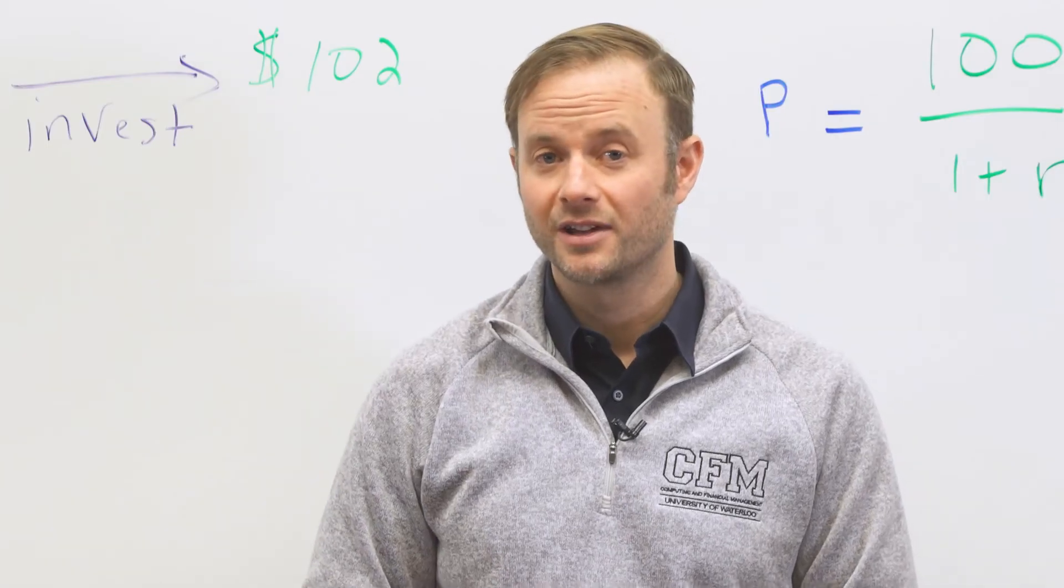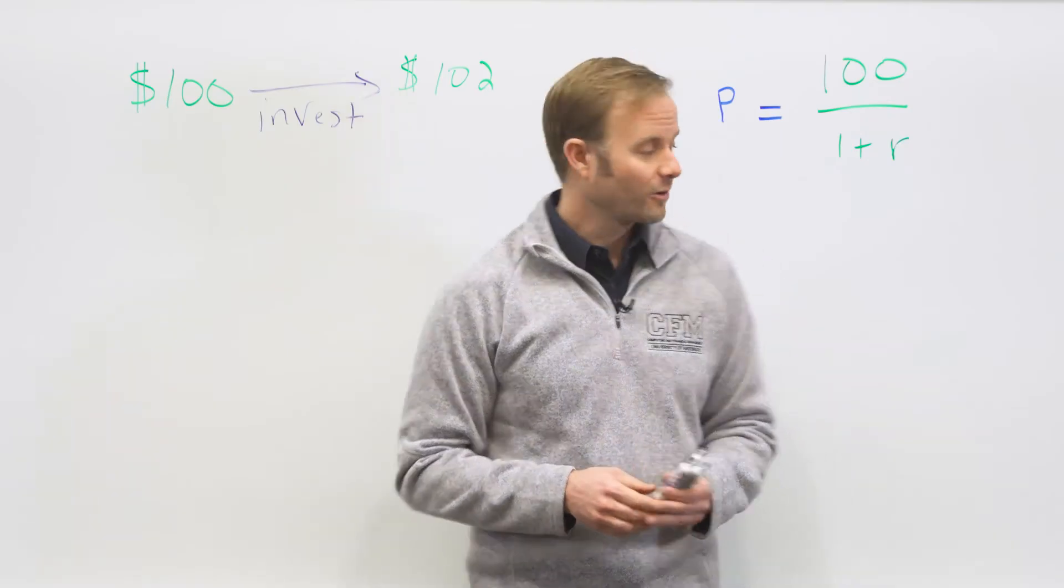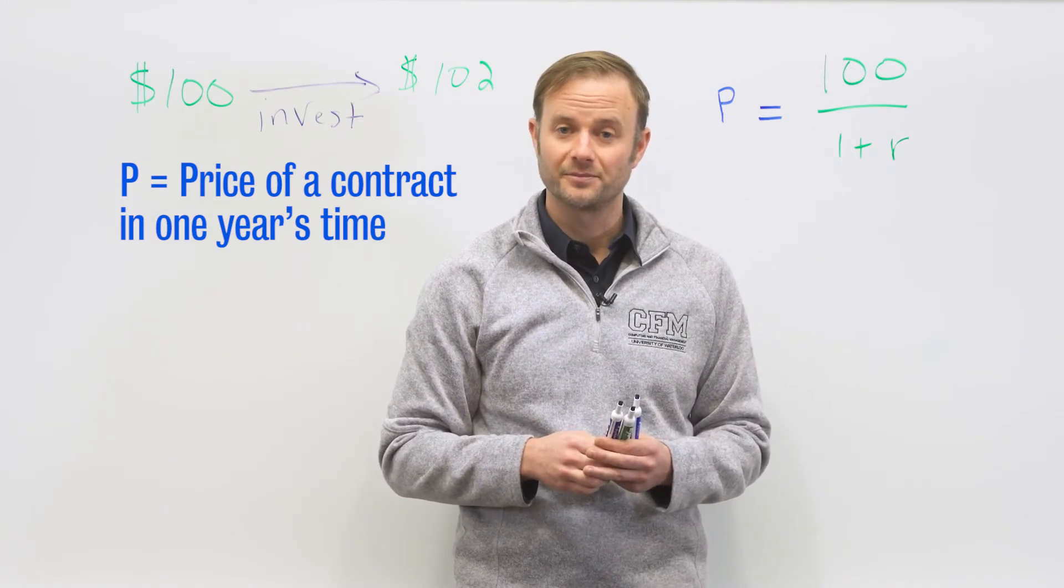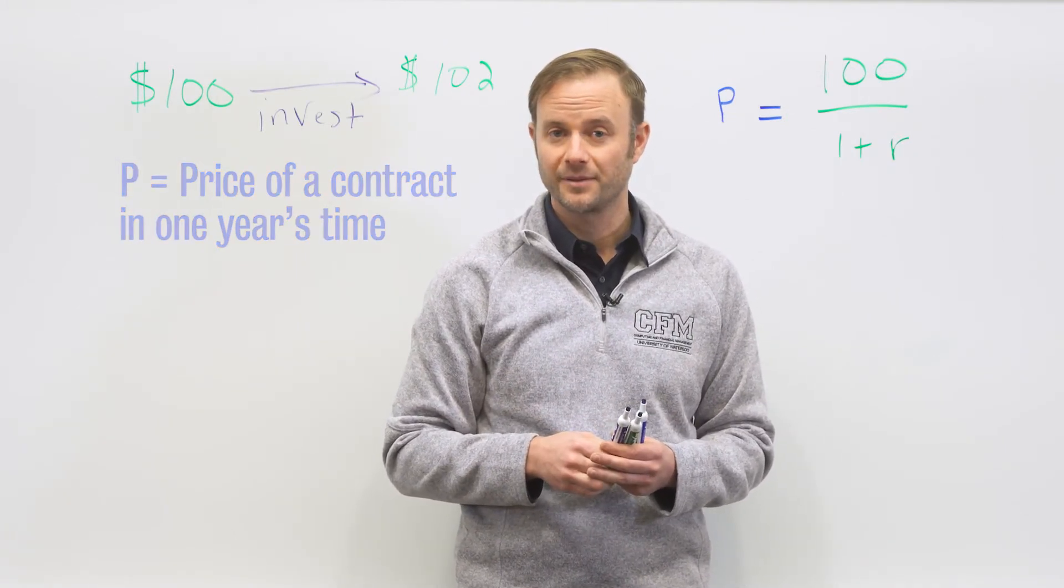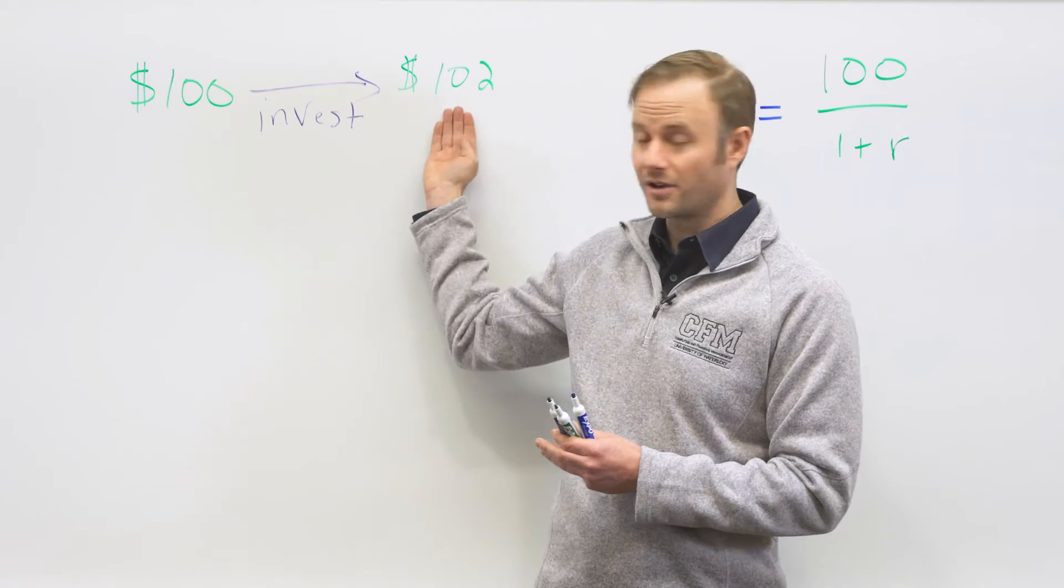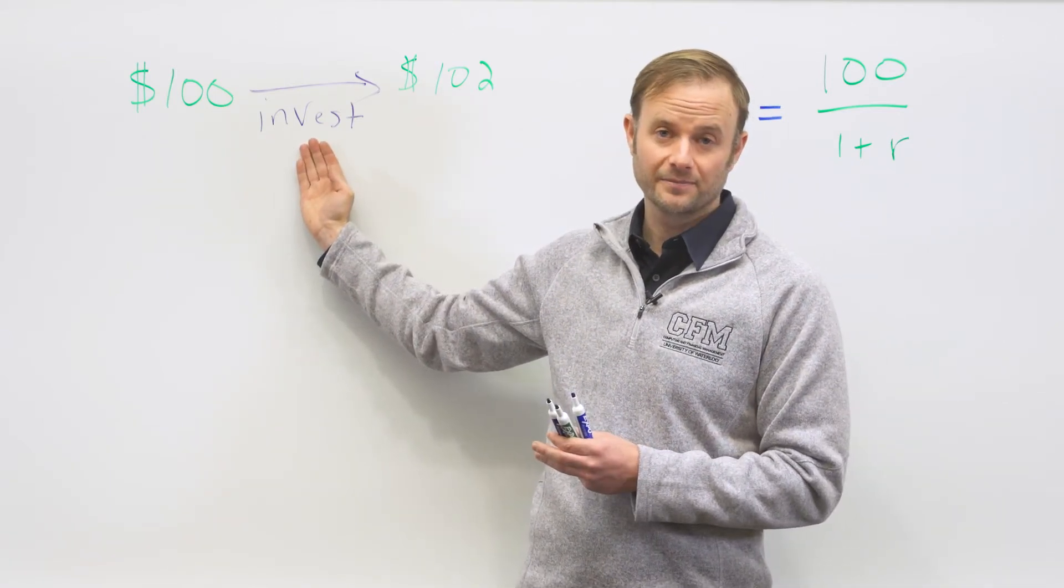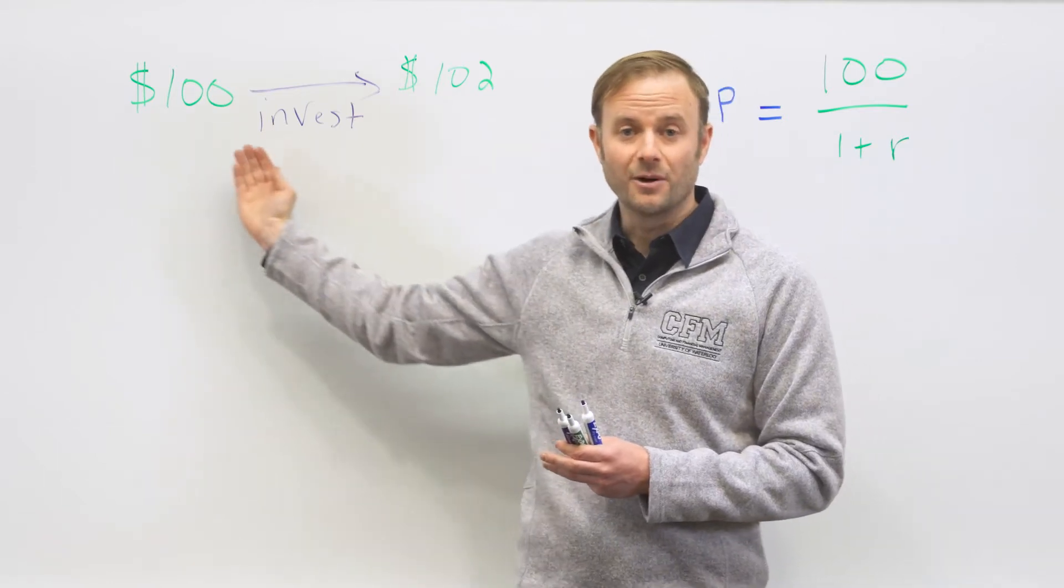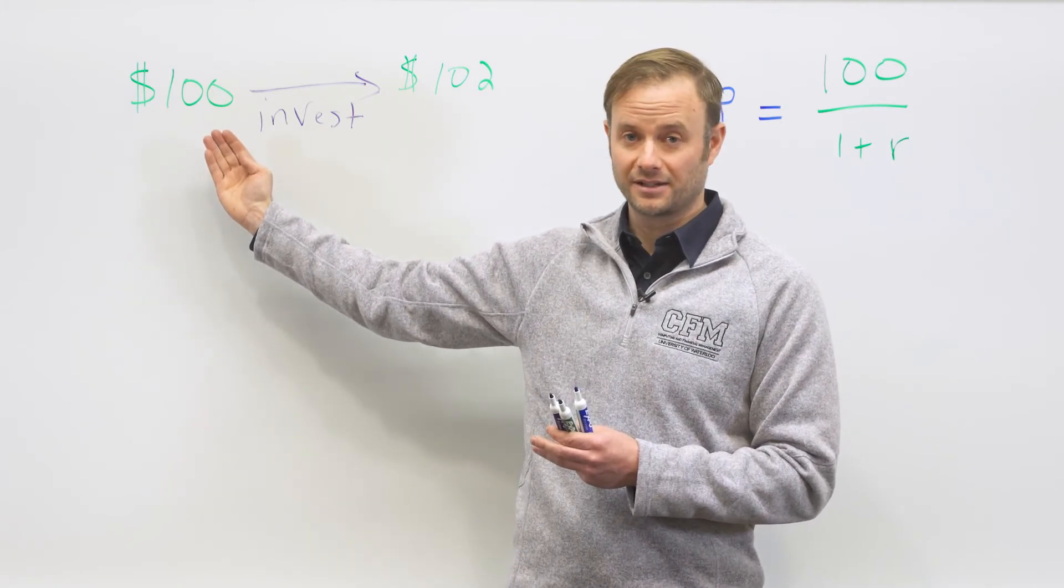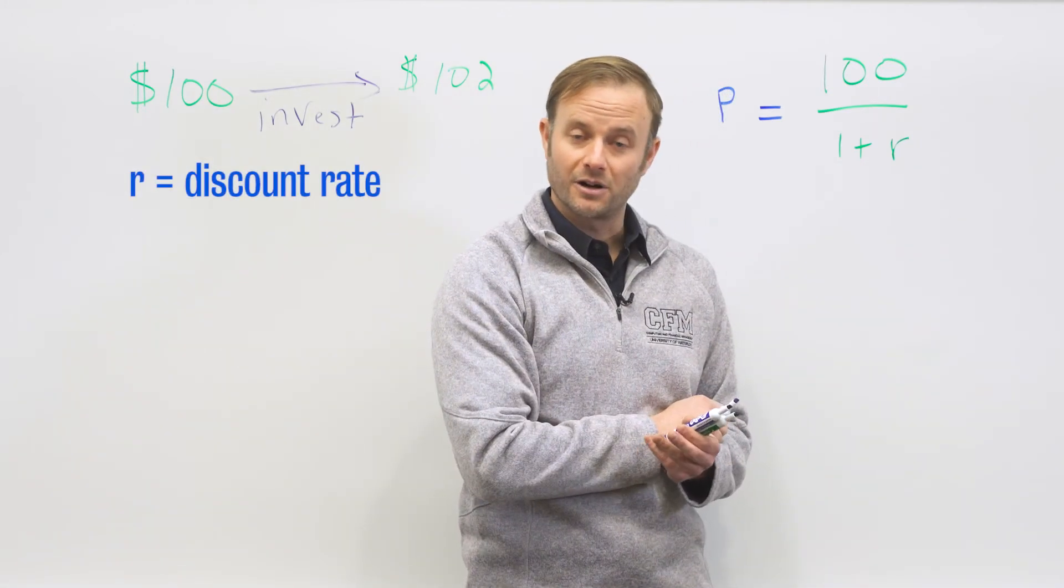So now what we want to know is how much is $100 paid to you in one year actually worth? Well, we're going to call that P. It's the price of a contract which pays $100 in one year's time. Over here, from $100 today to $102 in one year's time represented a rate of return of 2%. If we want to go the opposite way and bring it back in time, we do what's called discounting. And so I'm going to use this variable r to represent what we call a discount rate.